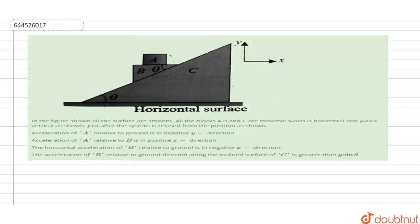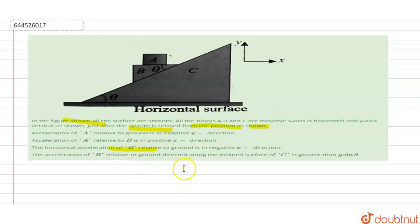Hello everyone. In this question it is saying: figure shown, all the surfaces are smooth. All the blocks A, B and C are movable. The x-axis is horizontal and y-axis is vertical. Just after the system is released from the position as shown, the acceleration of A relative to the ground is in the negative y direction; acceleration of A relative to B is in the positive x direction; horizontal acceleration of B relative to the ground is in the negative x direction; and acceleration of B relative to the ground directed along the inclined surface of C is greater than g sin θ.